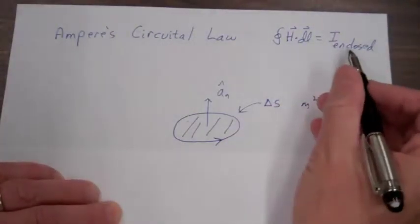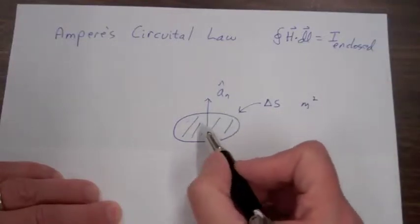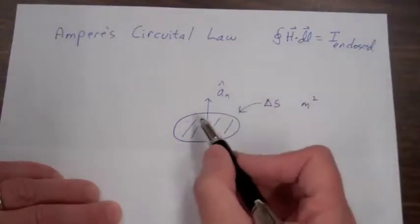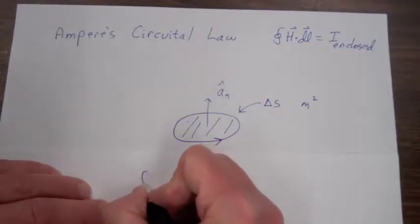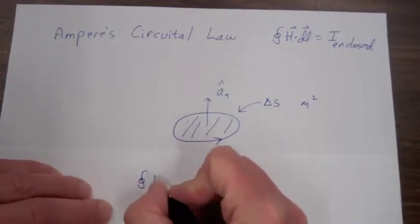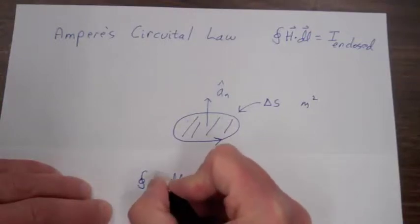So let's apply Ampere's circuital law to this path. Our path of integration is indicated by this arrow here. So we'll integrate H dot dl in that direction.